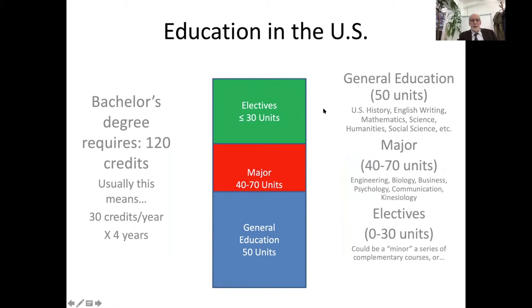Education in the United States: as you can see, a bachelor's degree requires 120 credits, and it takes four years to earn a Bachelor of Science or Education. General education requirements in the United States are 50 credits or units, and these consist of U.S. History, English Writing, Mathematics, Science, Humanities, and Social Science.